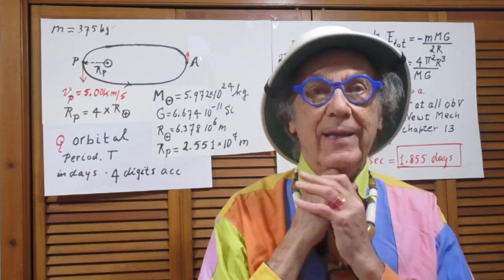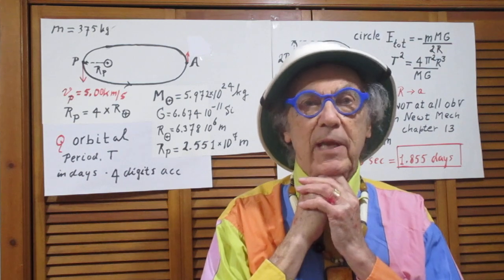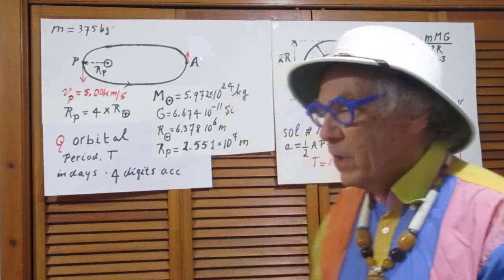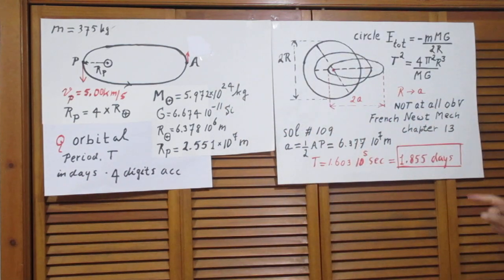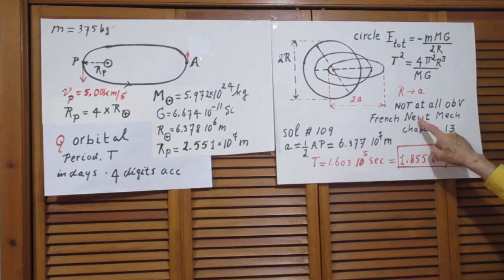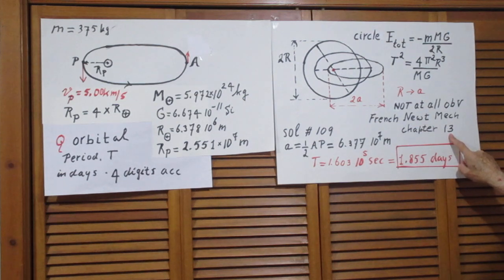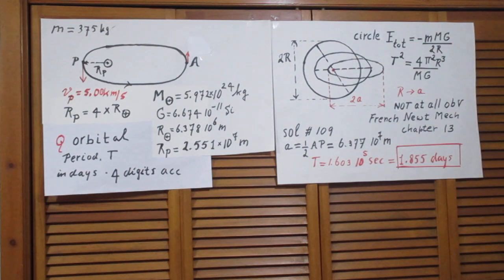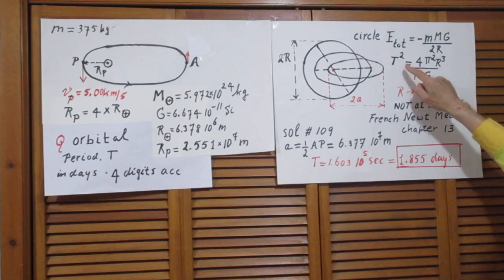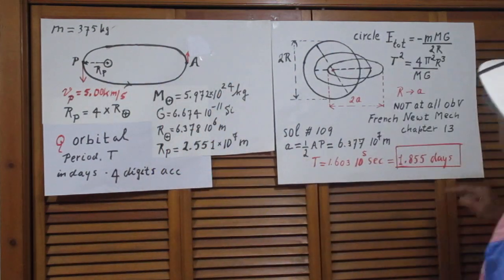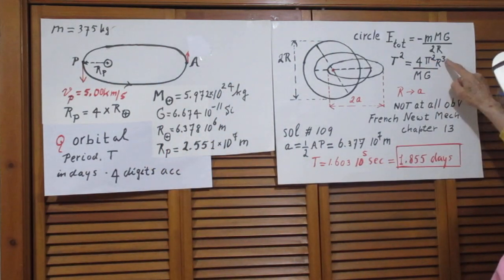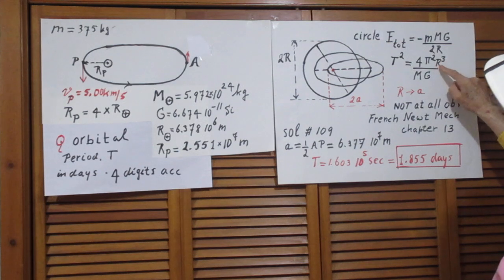However, if you are interested in proving it, you will find it in Tony French's book which is called Newtonian mechanics. It is in chapter 13. Once you accept that t-square of this orbit is 4 pi r-squared r to the third and you replace the r by A.